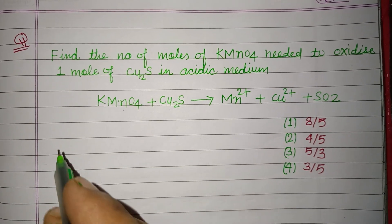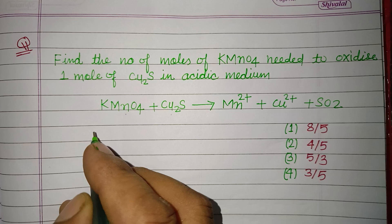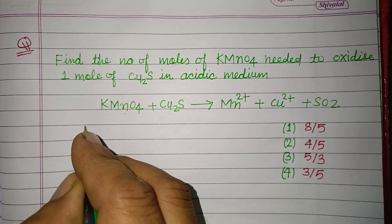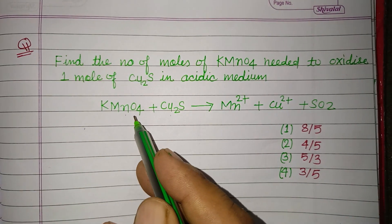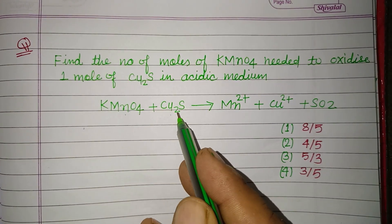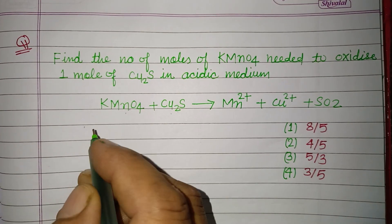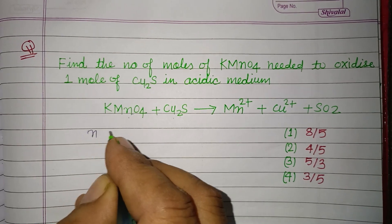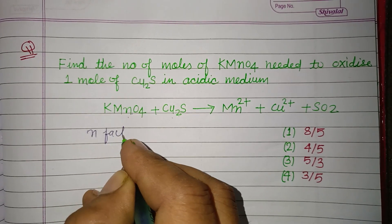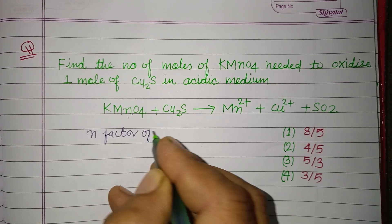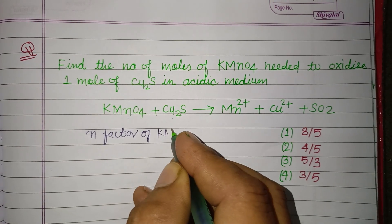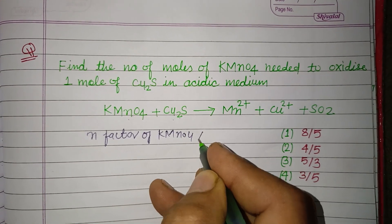and SO2. First, we find the n-factor of KMnO4 and Cu2S. Then we use the relationship: